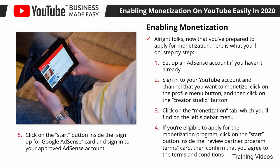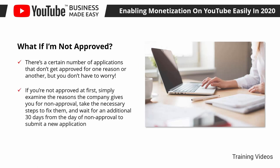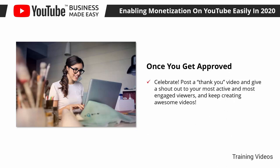What if I'm not approved? There's a certain number of applications that don't get approved for one reason or another, but you don't have to worry. If you're not approved at first, simply examine the reasons the company gives you for non-approval, take the necessary steps to fix them, and wait an additional 30 days from the day of non-approval to submit a new application. Once you get approved, celebrate! Post a thank you video, give a shout-out to your most active and engaged viewers, and keep creating awesome videos.